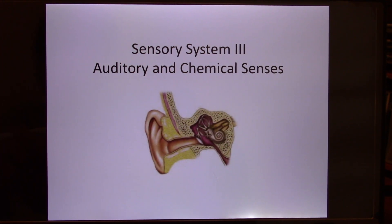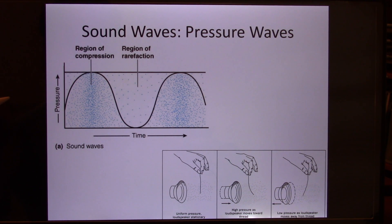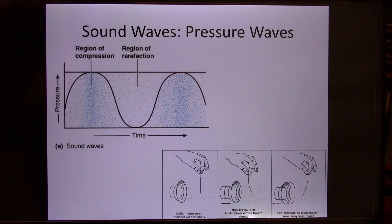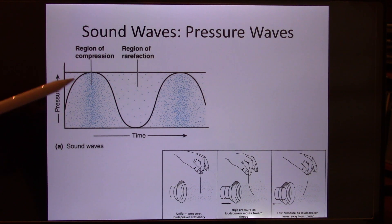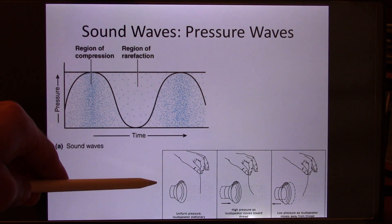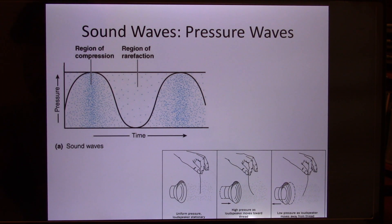We're in sensory system 3 and we're going to talk about the auditory system and the last two chemical senses. The auditory system picks up sound — the medium is usually air, sometimes water movement. Sound has two components: wave amplitude, which is loudness, and frequency, which is how many waves you have per second. If you take all the media out, you hear nothing. Sound compresses air in a waveform.